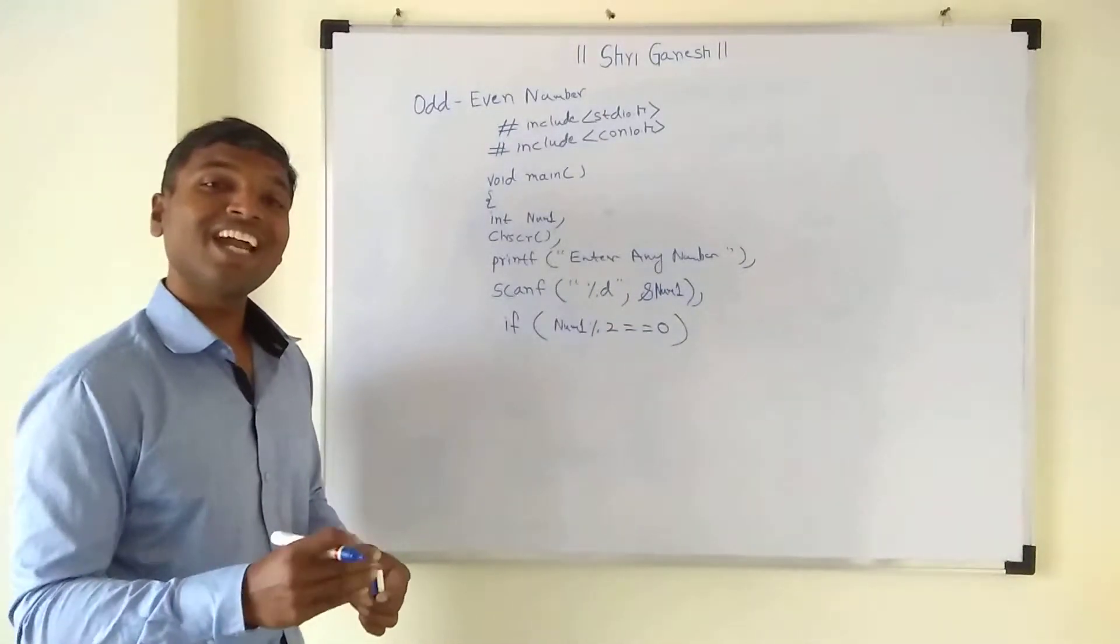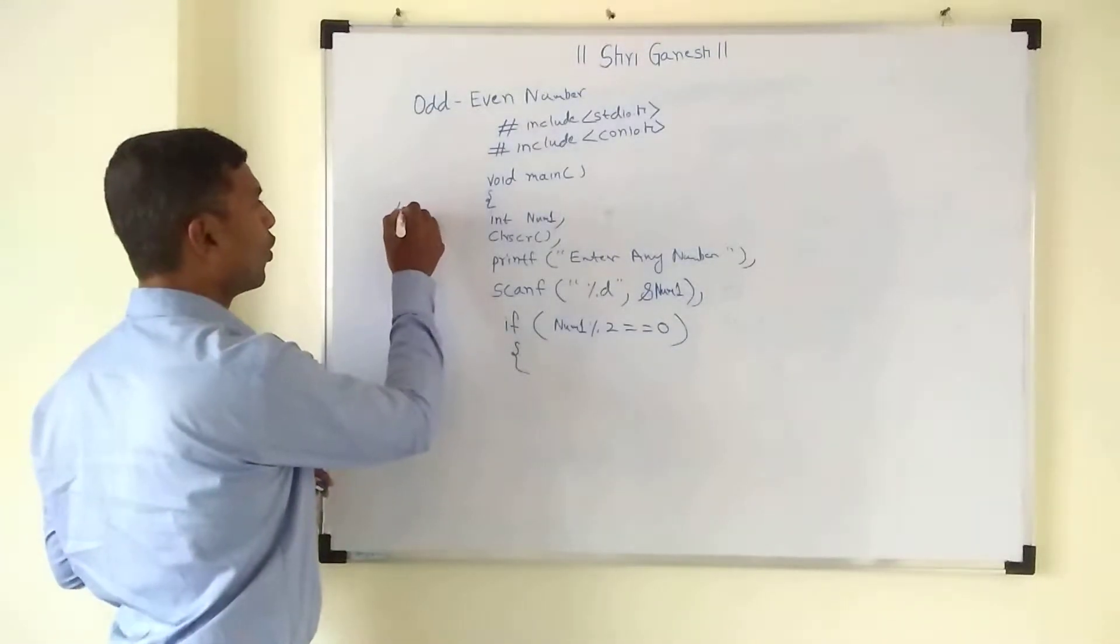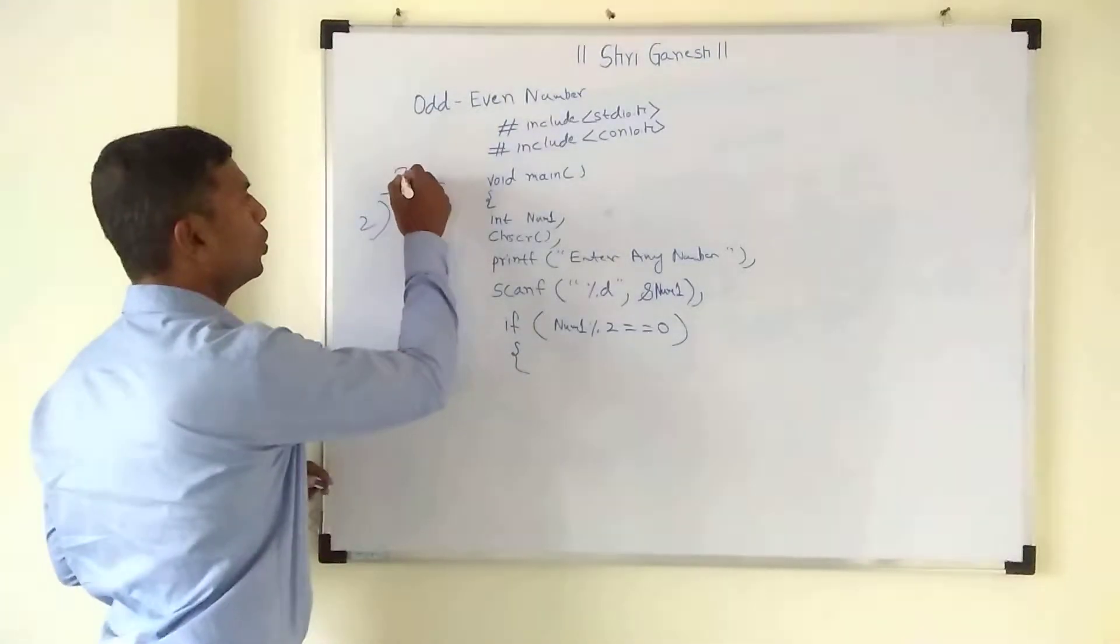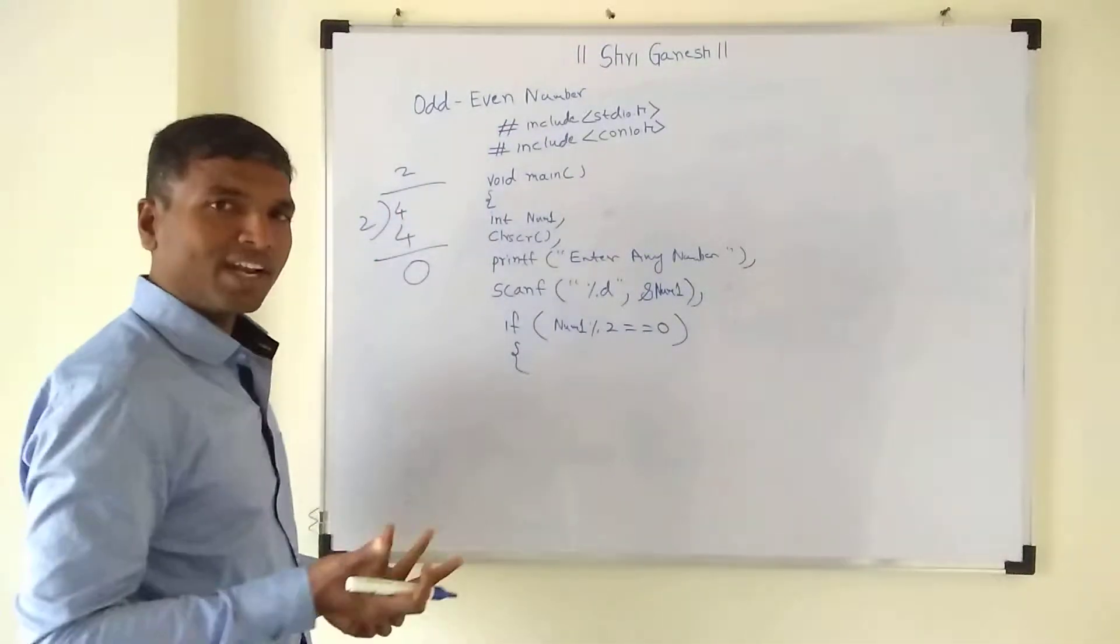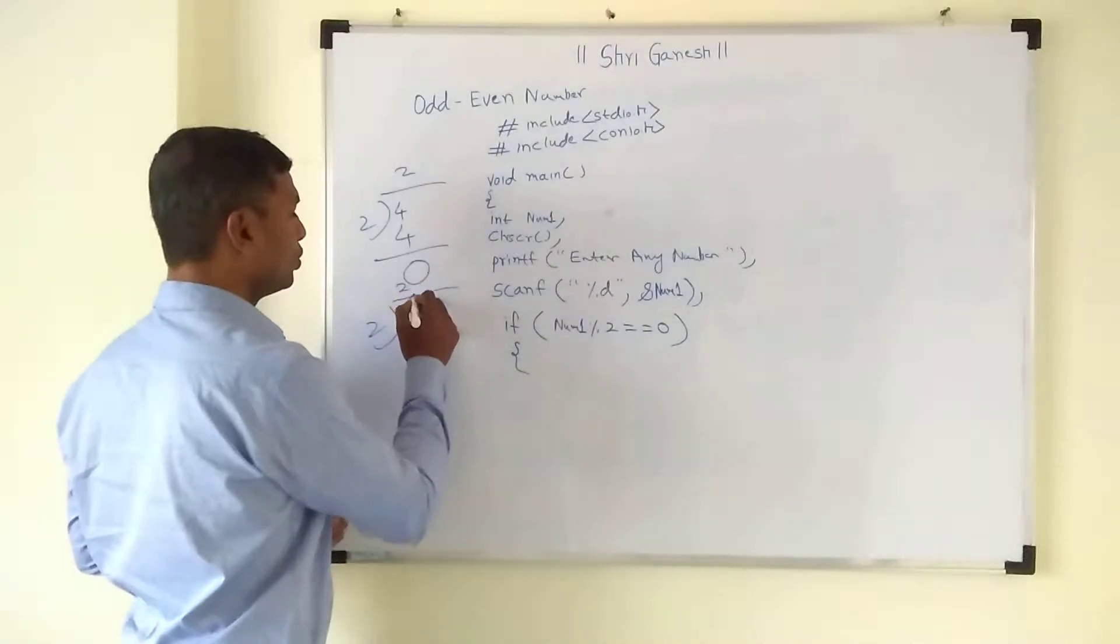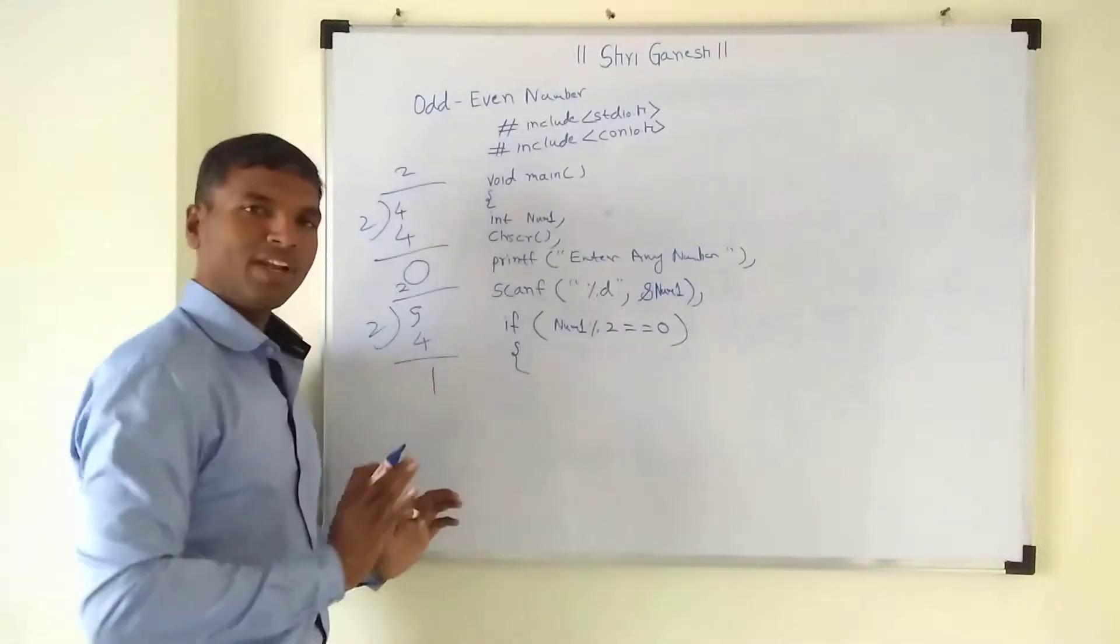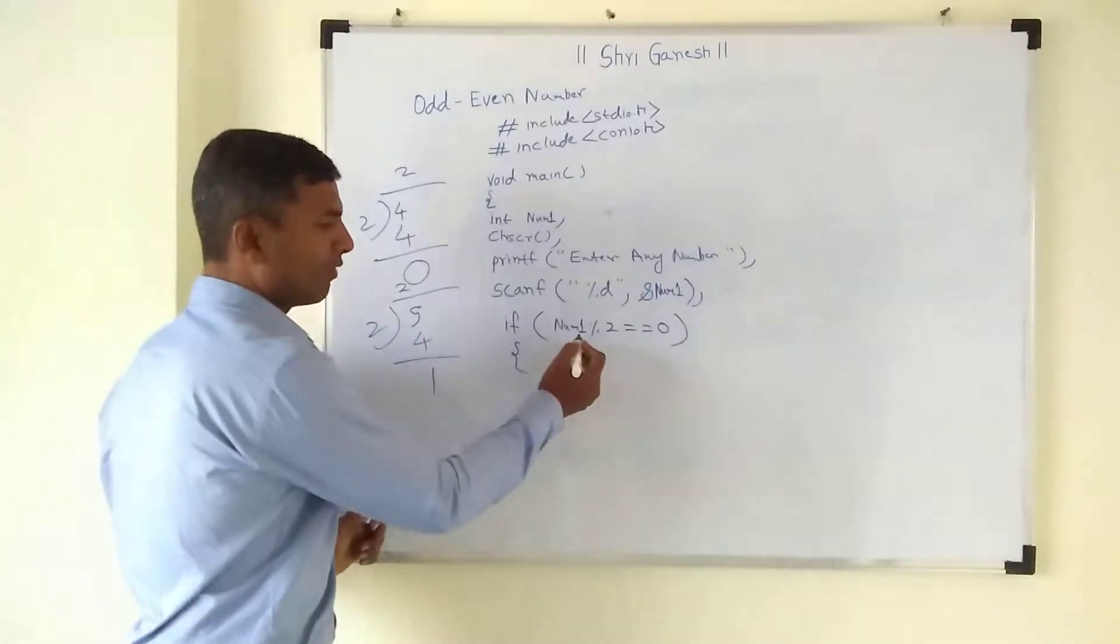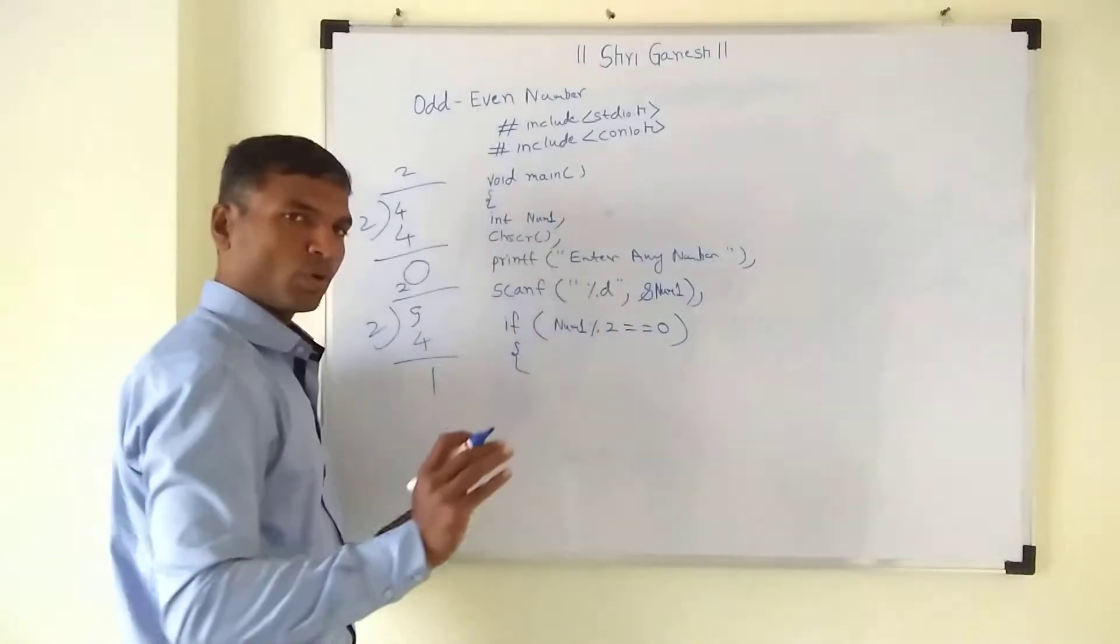Then and then only we can say that it is an even number. For example, if we take num1 as 4 and divide by 2, 2 twos are 4, so remainder will be 0. So 4 is an even number. But if we take 5 and divide by 2, 2 twos are 4, remainder is 1. So it is not an even number. That's why we use num1 mod 2 equal to equal to 0.